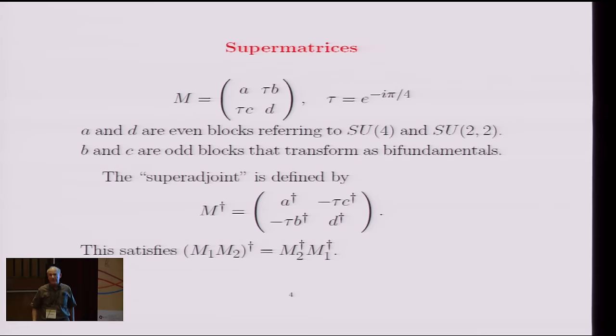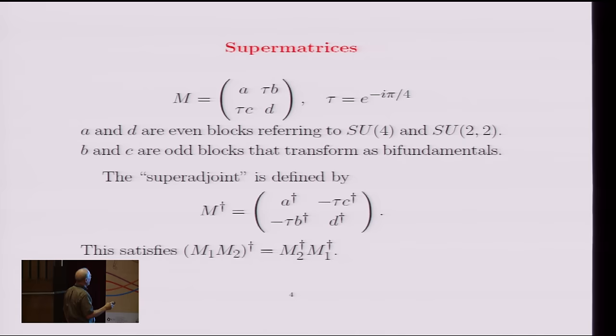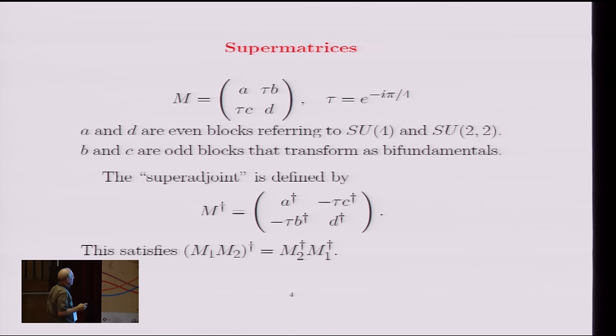So now it'll be useful to describe things in terms of supermatrices. My notation is a little bit different than what you'll find in the literature, but entirely equivalent. So a supermatrix has two bosonic blocks, A and D, and two fermionic blocks for the Grassmann odd pieces in the off diagonal blocks. People don't usually put in this funny phase that I've introduced here. They would just write B and C without this phase. But by introducing it, I can treat the upper and lower box, the B and C blocks, in a more symmetrical way.